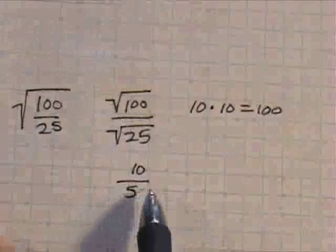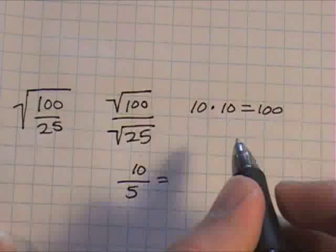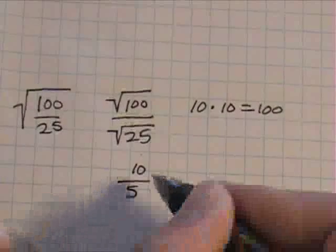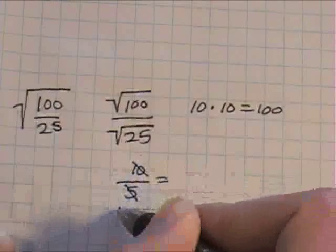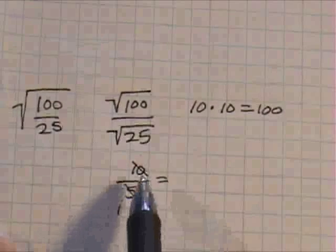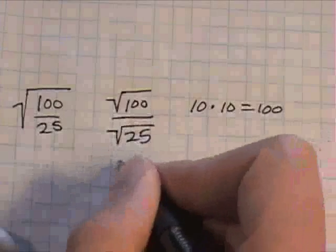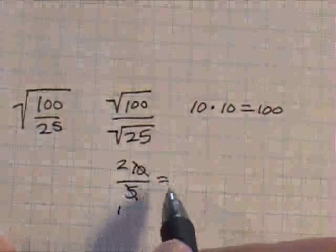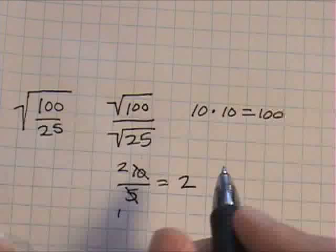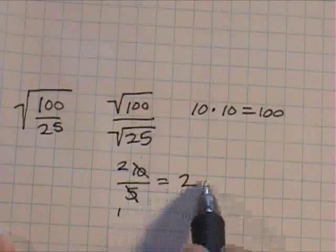Ten over five, you can simplify this, because we know that five goes in to ten two times, and it just becomes two. You don't have to write the two over one. It's two.